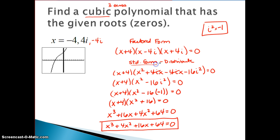This is my cubic polynomial in standard form. It will have these three zeros — one of them real and the other two imaginary.